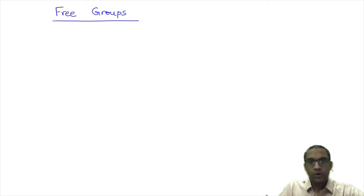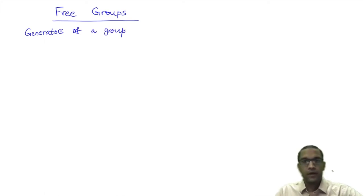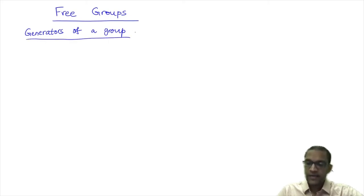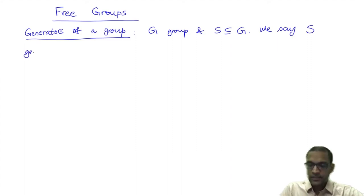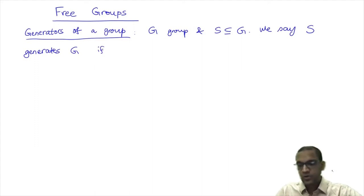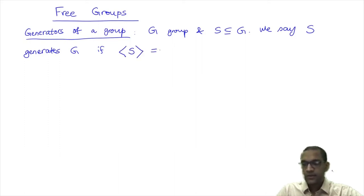Here is the main motivation. Firstly, we know what generators of a group mean. What is the set of generators of a group? Given a set S, suppose G is a group. Let G be a group and S be any subset of G. Then we say S generates the whole group G if the smallest subgroup generated by S is all of G.